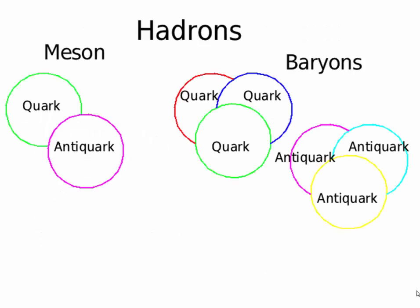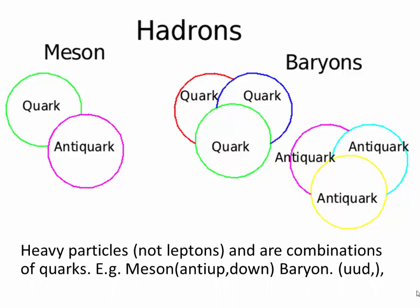This is a graphical way of looking at it. These are all hadrons. The ones on the left are quark and anti-quark. The ones on the right are, for example, quark, quark, quark — or it could be anti-quark, anti-quark, anti-quark. It could be any combination. So these heavy particles, these hadrons, which are not leptons, are combinations of quarks.